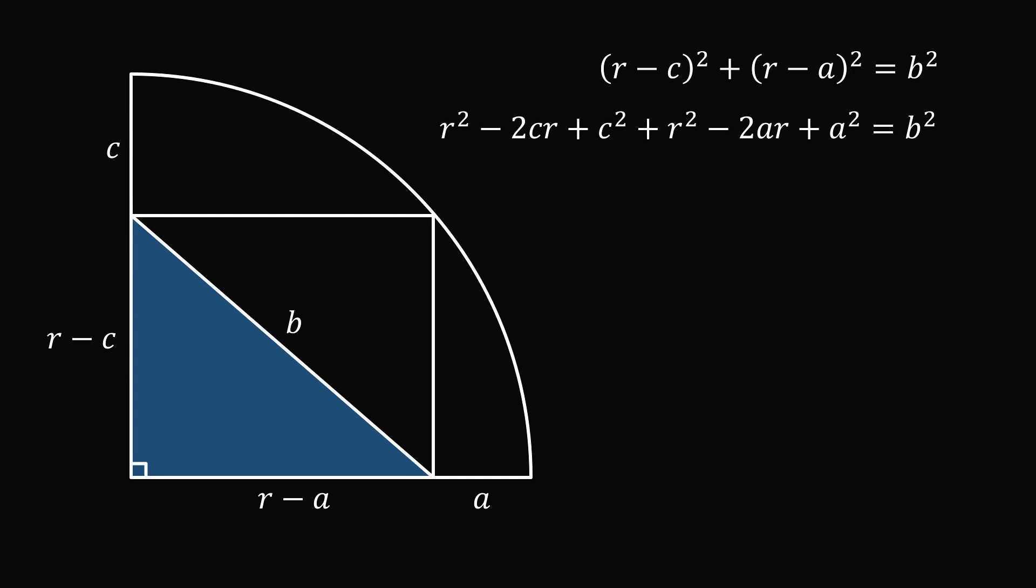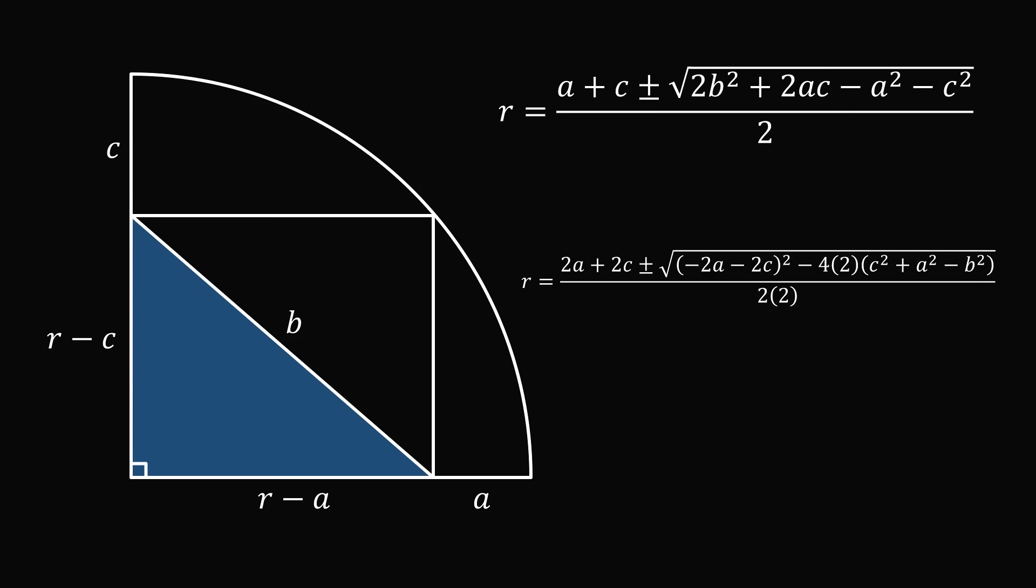We can expand both binomials, and then we need to collect like terms. So we have 2r squared plus r multiplied by the coefficient minus 2a minus 2c plus the remaining terms, which are all constant, which is c squared plus a squared minus b squared. This is all equal to zero. We have the canonical form of a quadratic equation with the variable r. So we can solve for the variable r. We now just need to simplify this mess, and we end up with the following equation.